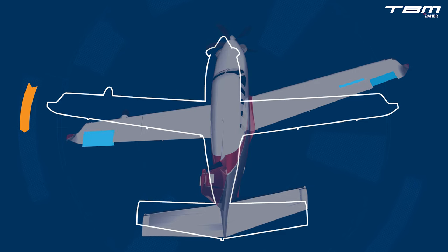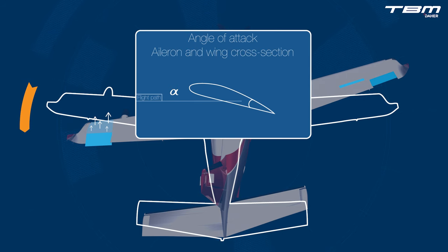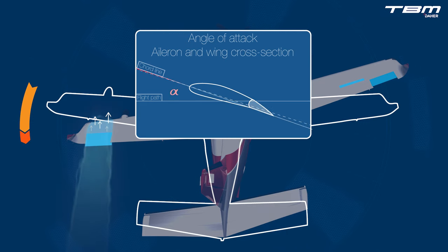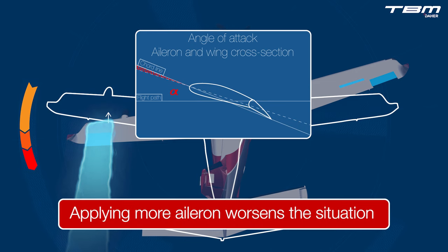On all airplanes, the lifting aileron increases the angle of attack at the associated outboard wing section. Lift is manipulated to roll an airplane; therefore, if one is truly flying at minimum controllable airspeed, any increase in the wing's angle of attack would exceed the critical angle of attack, resulting in a wing stall. Moreover, if the critical angle of attack is exceeded by the lifting aileron, a stall results and the airplane rolls in the direction of the stall. Applying more aileron worsens the situation.